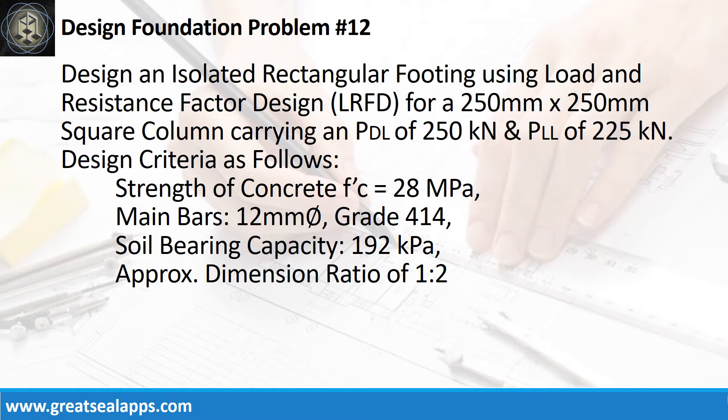Design criteria are as follows: strength of concrete is 28 MPa, main bars are 12 mm bar grade 414, soil bearing capacity is 192 kPa, and approximate dimension ratio of 1 to 2.